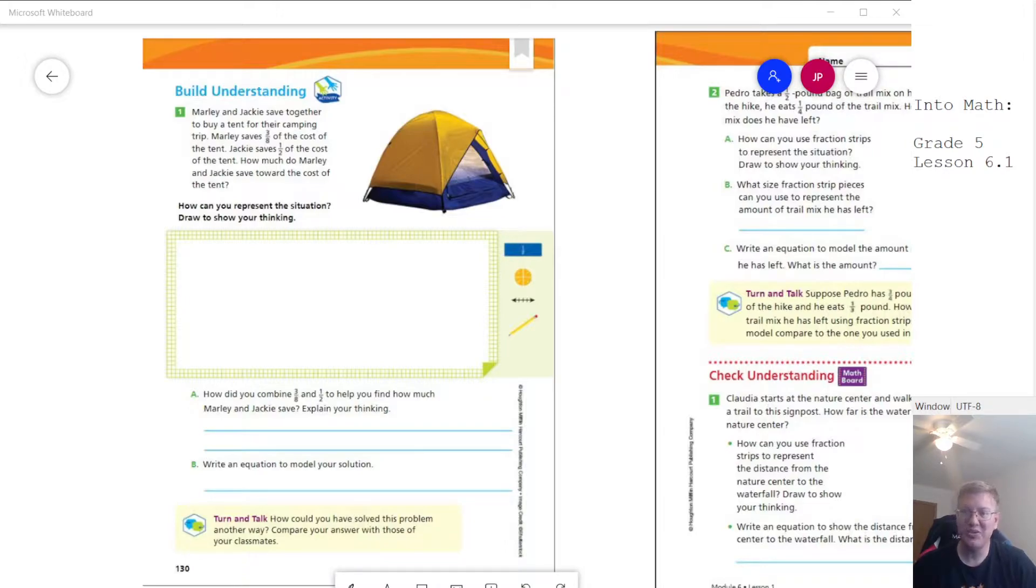So after concluding our module on working with volume of shapes, we're back into working with fractions. We're going to review a little bit of some of the things that we've worked on to start out, specifically finding equivalent fractions so that we can add and subtract. We can never accurately do that without finding equivalent fractions.